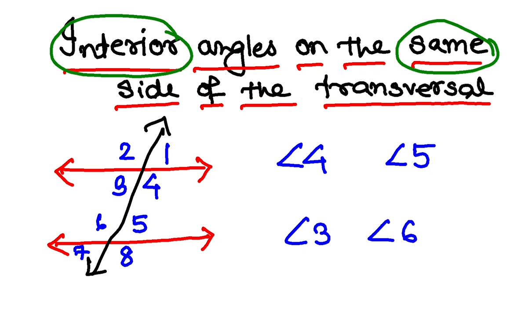However, interior angles on the same side are not equal. Rather, their sum is always 180 degrees. A very important property: angle 4 plus angle 5 equals 180 degrees, and angle 3 plus angle 6 will also be 180 degrees.